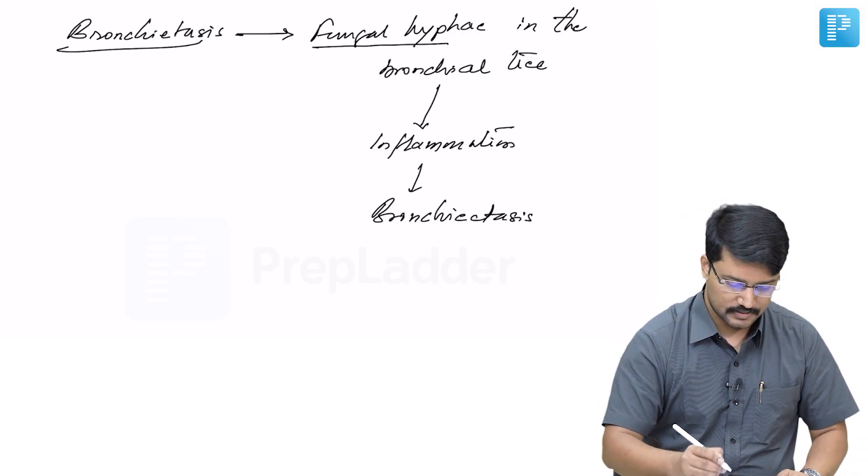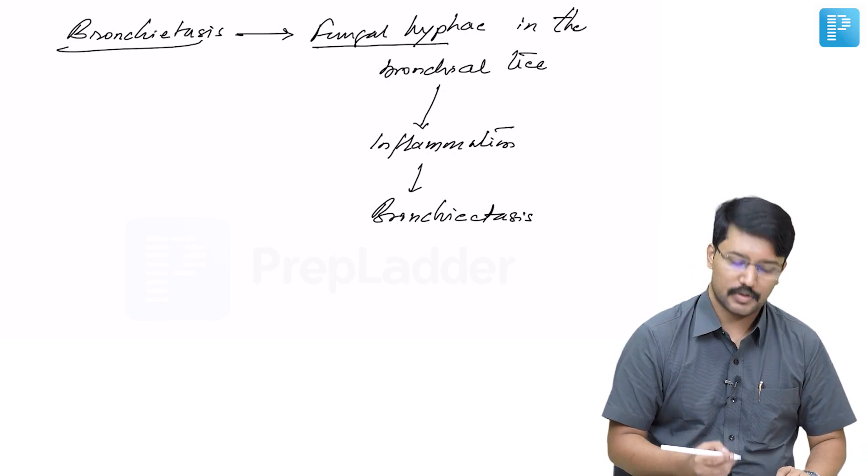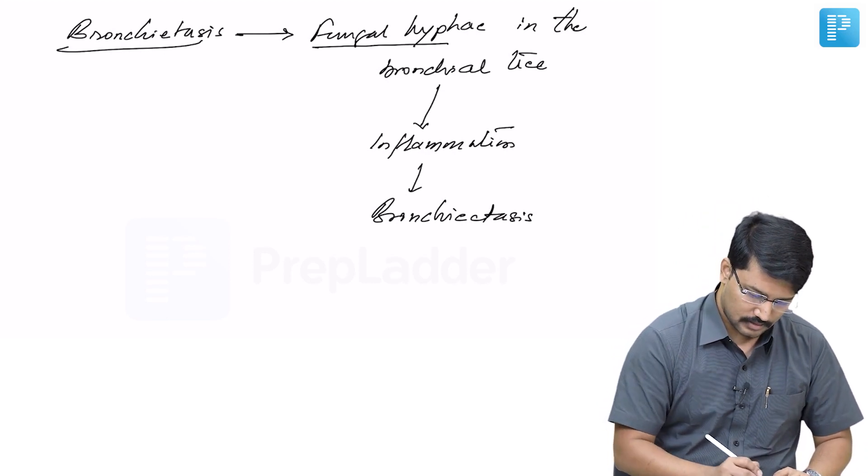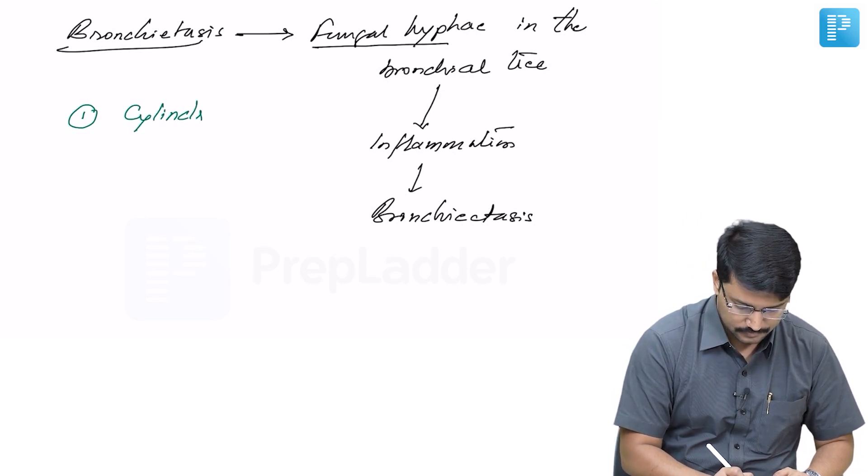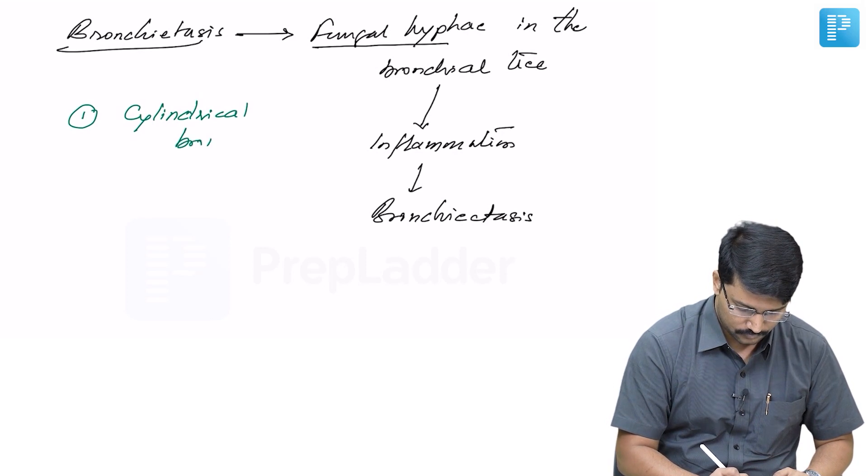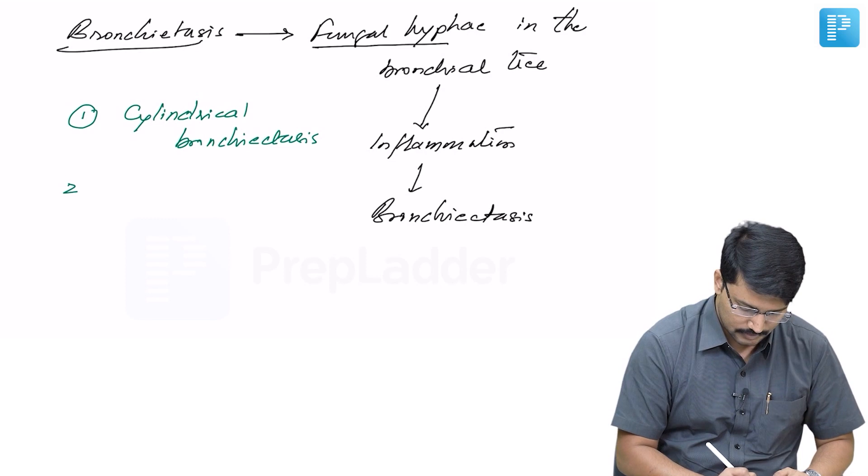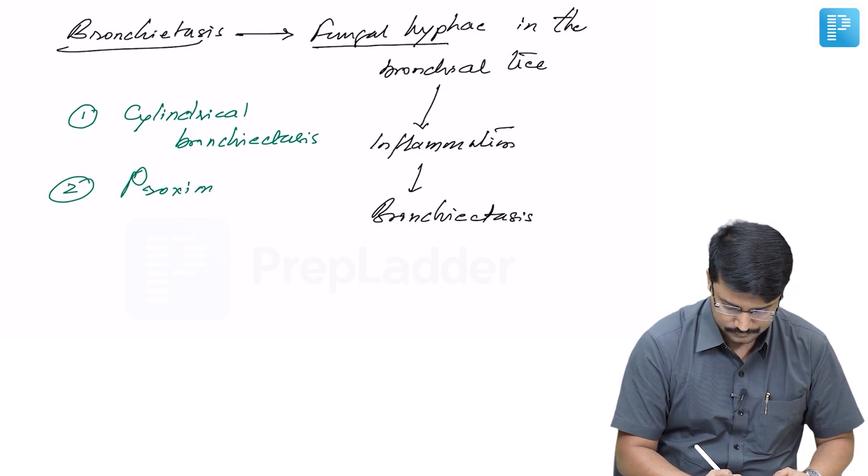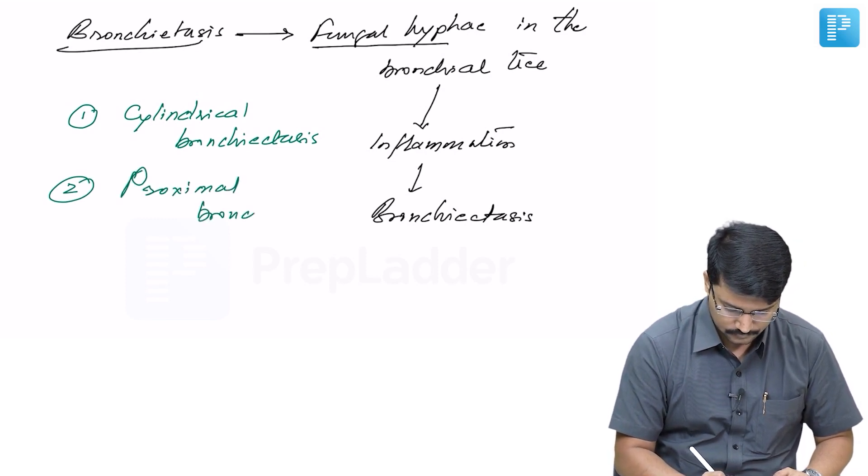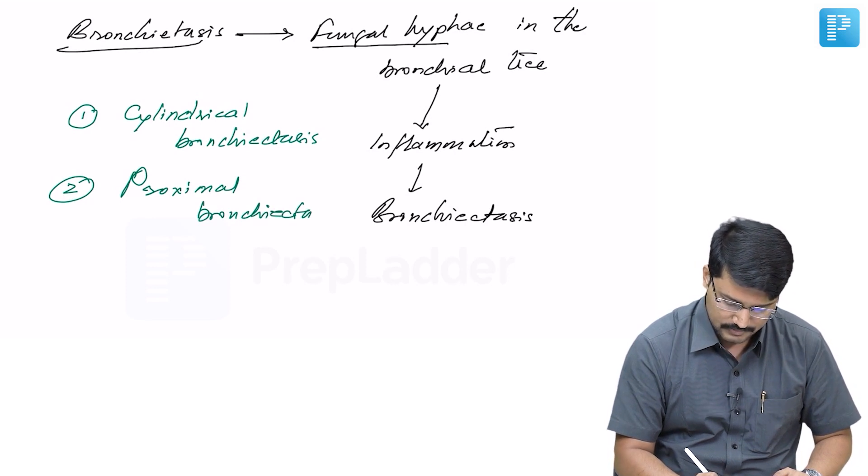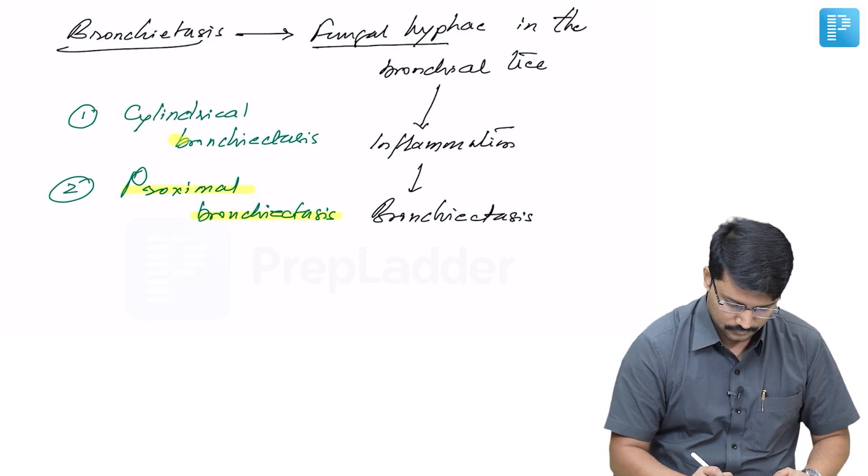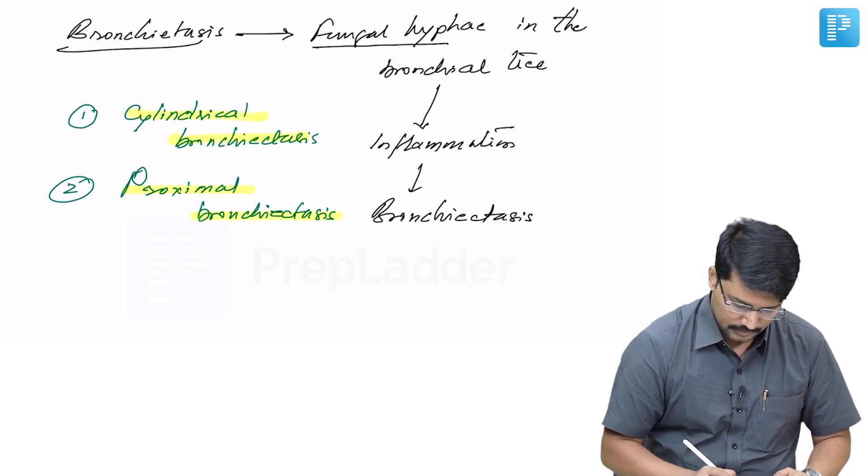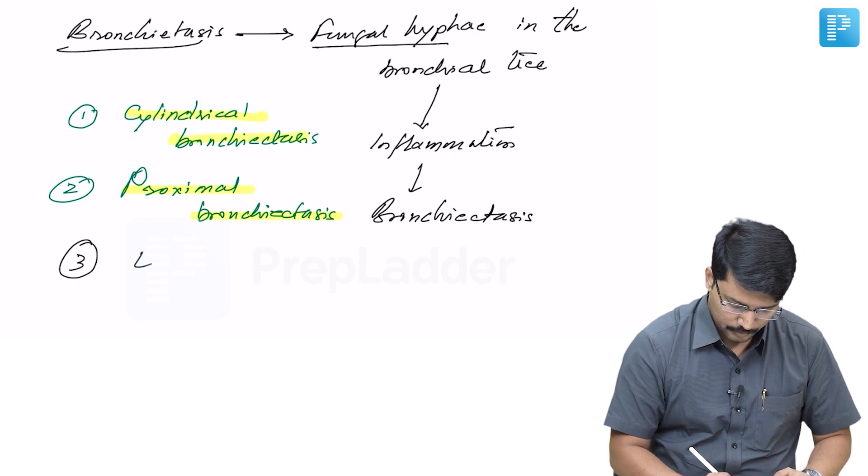The classic bronchiectasis described in patients with ABPA has two points: cylindrical and proximal bronchiectasis, usually involving upper lobes.